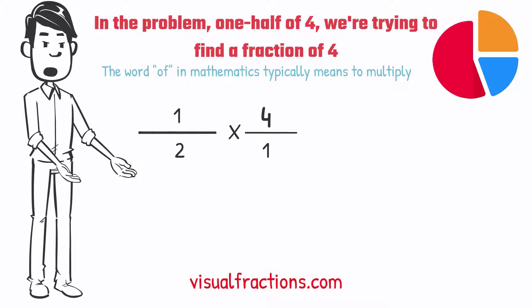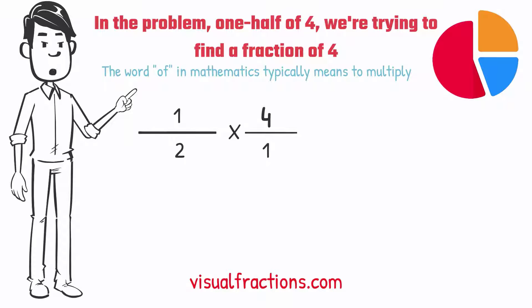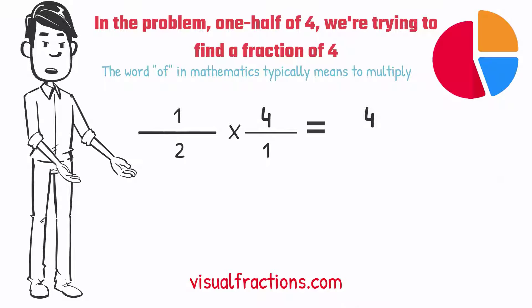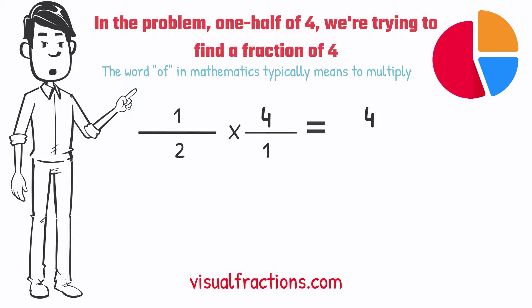Now, we proceed to multiply across. First, multiply the numerators, one times four equals four. Next, multiply the denominators, one times two equals two.